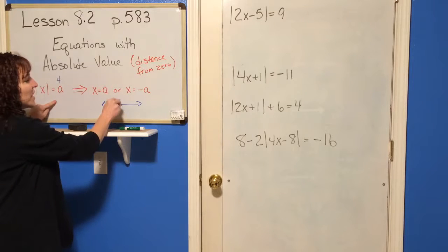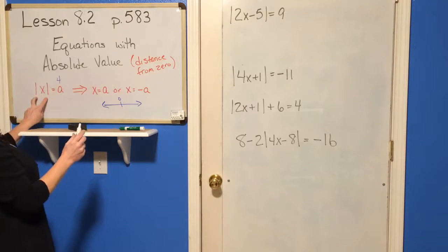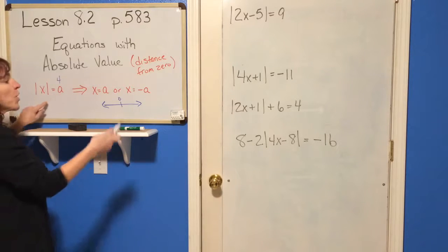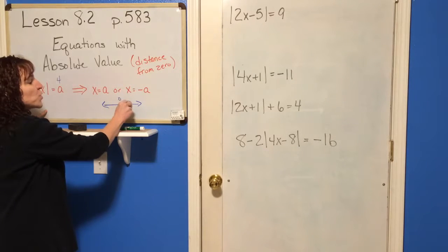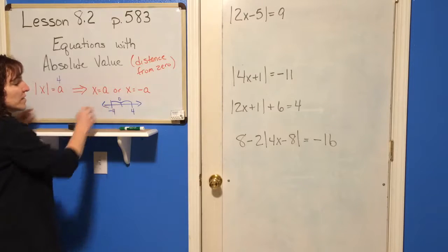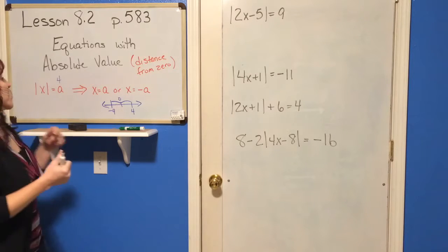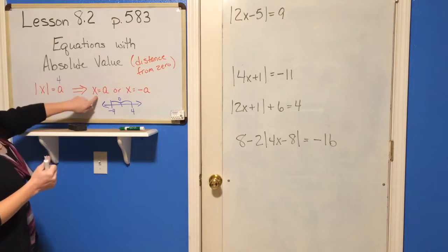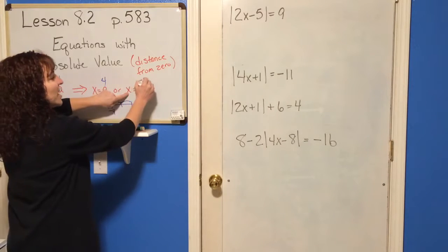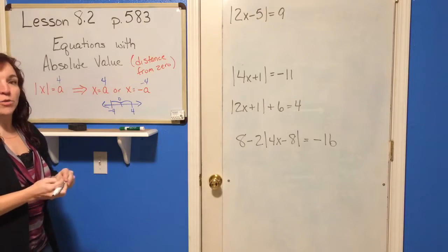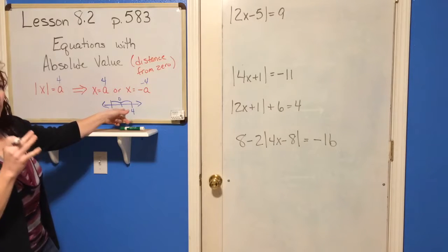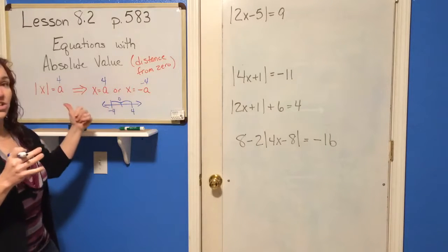So that means — here's zero — the absolute value of x means the distance that this number is away from zero is 4. So we could go 4 this way, but we could also go 4 this way. So it's a distance, which means that x is either 4 or x is negative 4. That's why it could be plus or minus, because it's a distance. Starting at zero with absolute value 4, I can either go to the right or to the left.